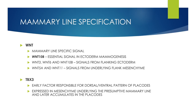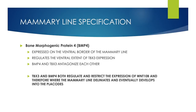TBX-3 is an early factor responsible for the dorsal-ventral pattern of placodes. TBX-3 is expressed in mesenchyme underlying the presumptive mammary line and later accumulates in the placodes. Bone morphogenic protein 4, or BMP-4, is expressed on the ventral border of the mammary line. BMP-4 regulates the ventral extent of TBX-3 expression, and BMP-4 and TBX-3 antagonize each other. Together, TBX-3 and BMP-4 regulate and restrict the expression of WNT-10b, determining where the mammary line delineates and eventually develops into the placodes.